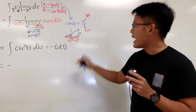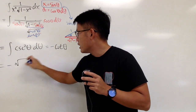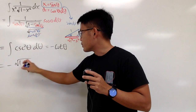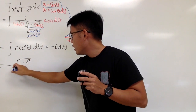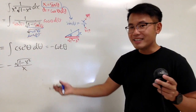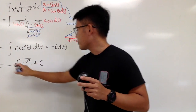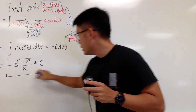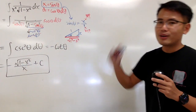So cotangent theta is adjacent over opposite, which is square root of 1 minus x squared over x. Therefore our answer is negative square root of 1 minus x squared over x, plus C. That is our final answer.